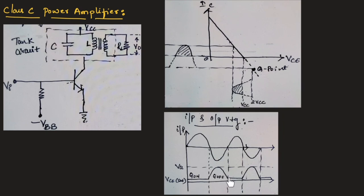During positive half of the input cycle, transistor will be on. That is why we will get the output waveform, which will be equal to the input signal.